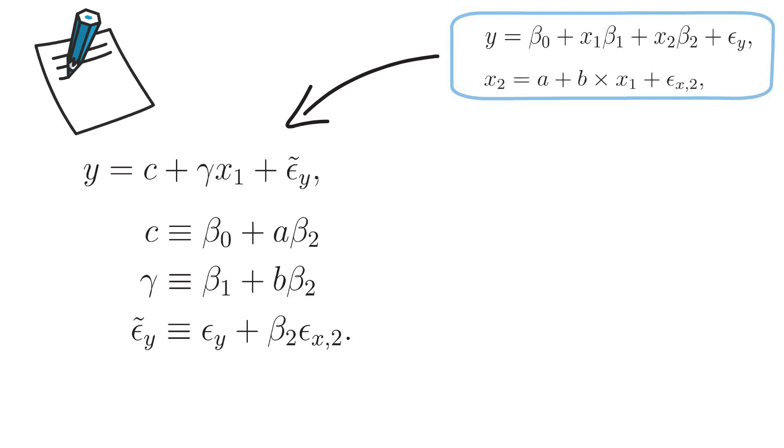And epsilon tilde y has to equal epsilon y plus beta 2 times epsilon x2. So if you now regress y on x1, so you are omitting x2, the OLS exogeneity assumption is still fulfilled. Yet the OLS estimate of gamma will not coincide with the population parameter beta 1.